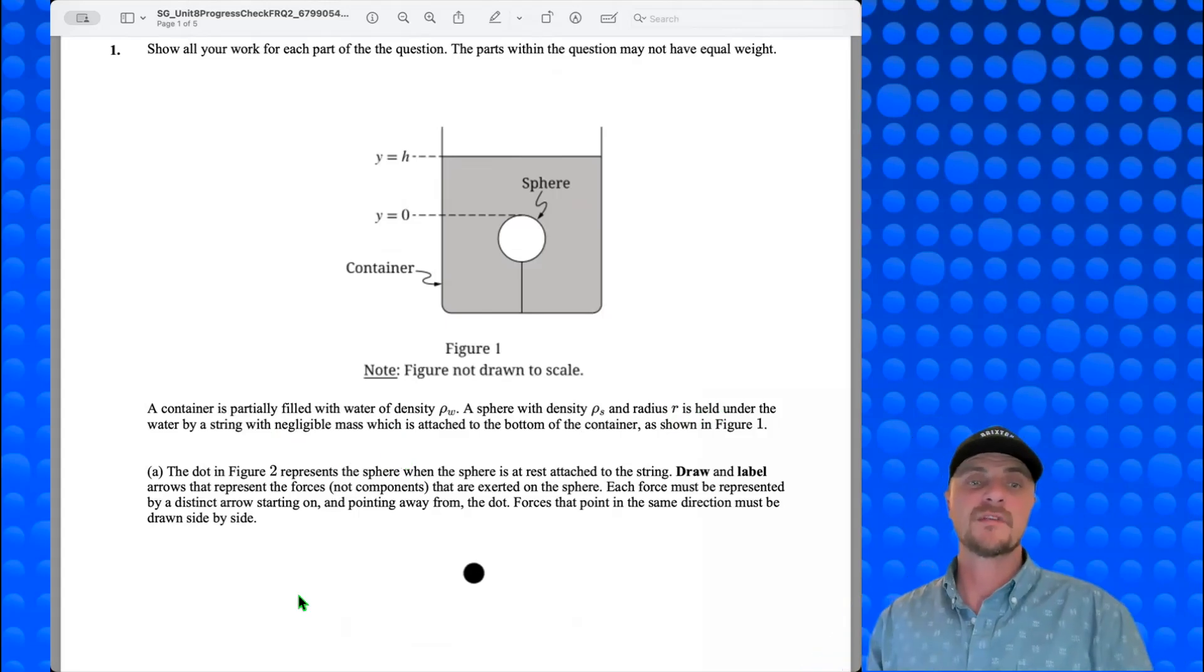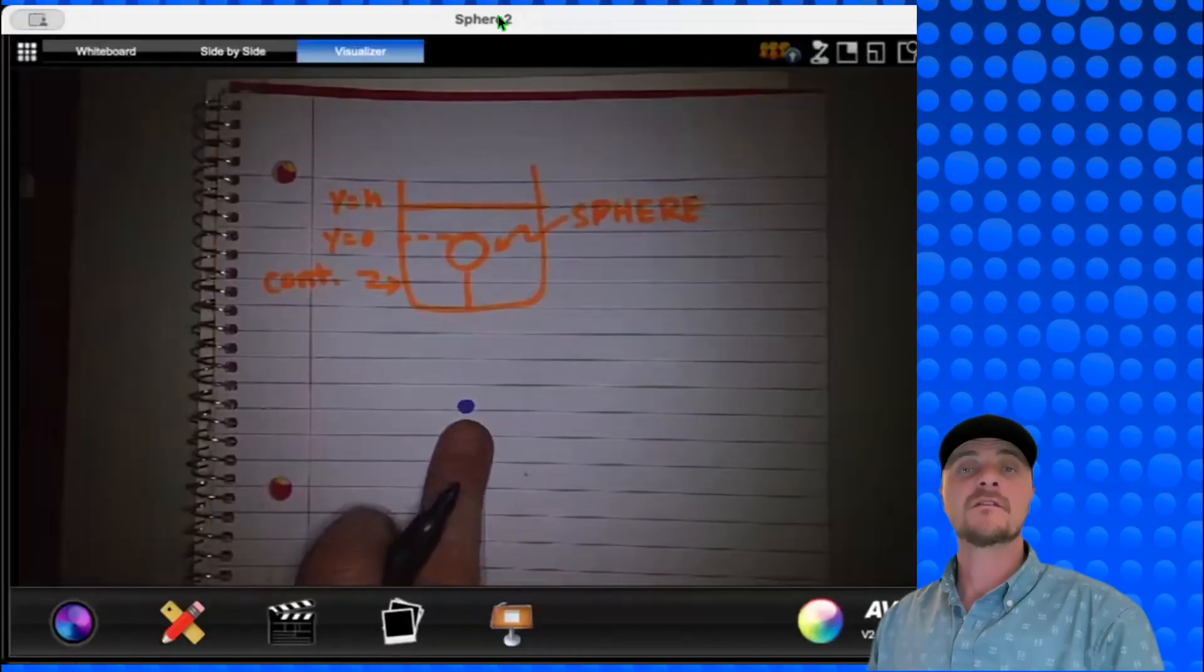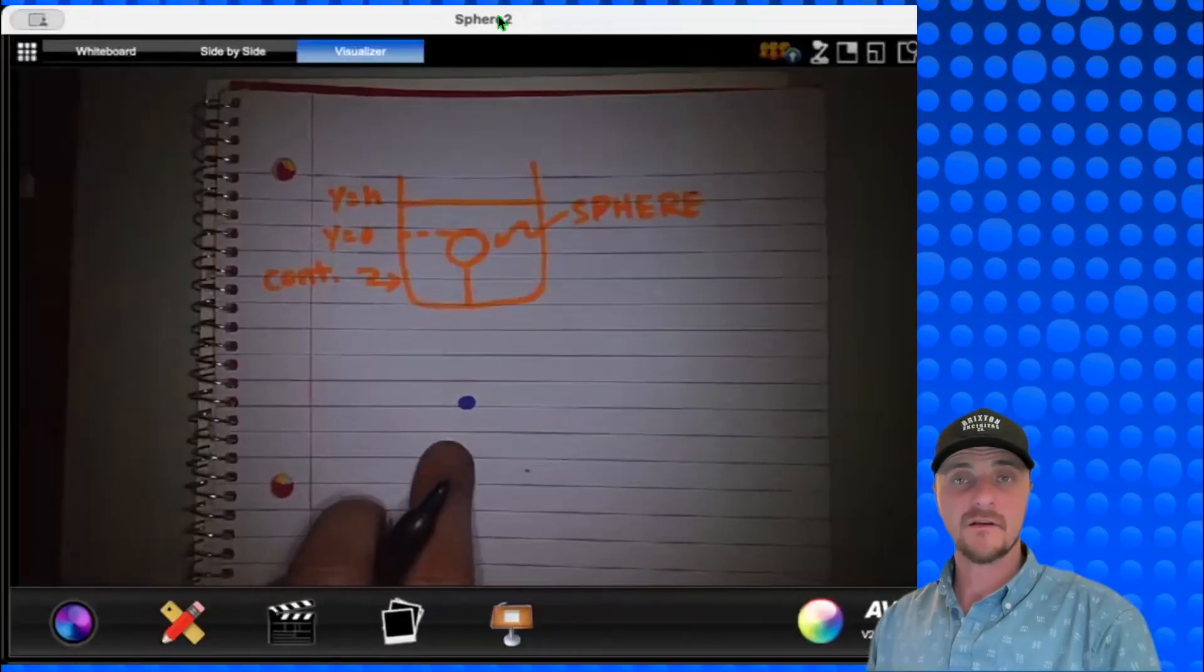Part A: the dot in Figure 2 represents the sphere when the sphere is at rest attached to the string. Draw and label arrows that represent the forces, not components, that are exerted on the sphere. Each force must be represented by a distinct arrow starting on and pointing away from the dot. Forces that point in the same direction must be drawn side by side. So this dot is the sphere. What forces are acting on it?